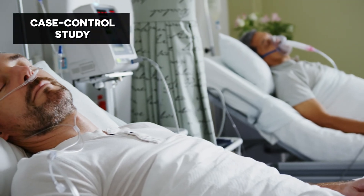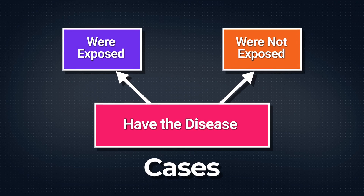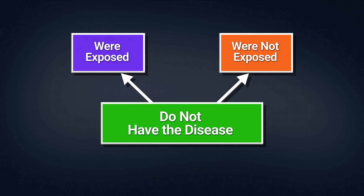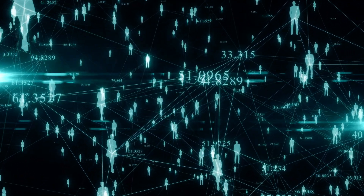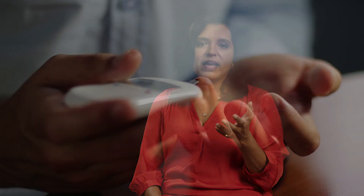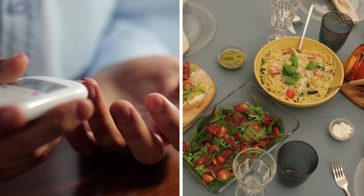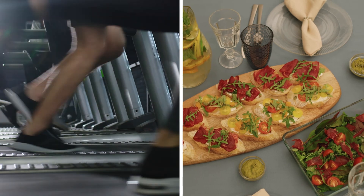Case-control studies examine the relationship between an exposure and disease by identifying individuals with the disease — called cases — and comparing them to a group without the disease — called controls. Exposure data such as lifestyle, genetics, and/or environmental factors are collected and compared between cases and controls. For example, you begin with an individual who has diabetes and ask about their diet, compared to a control group without diabetes. You then examine the odds of increased diabetes in individuals eating more fatty foods compared to those who are not.